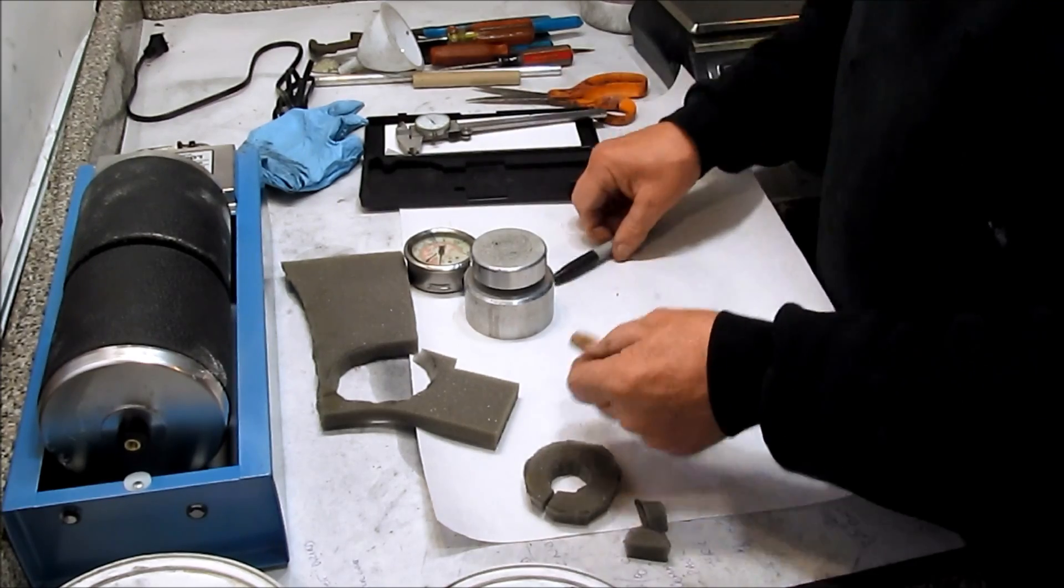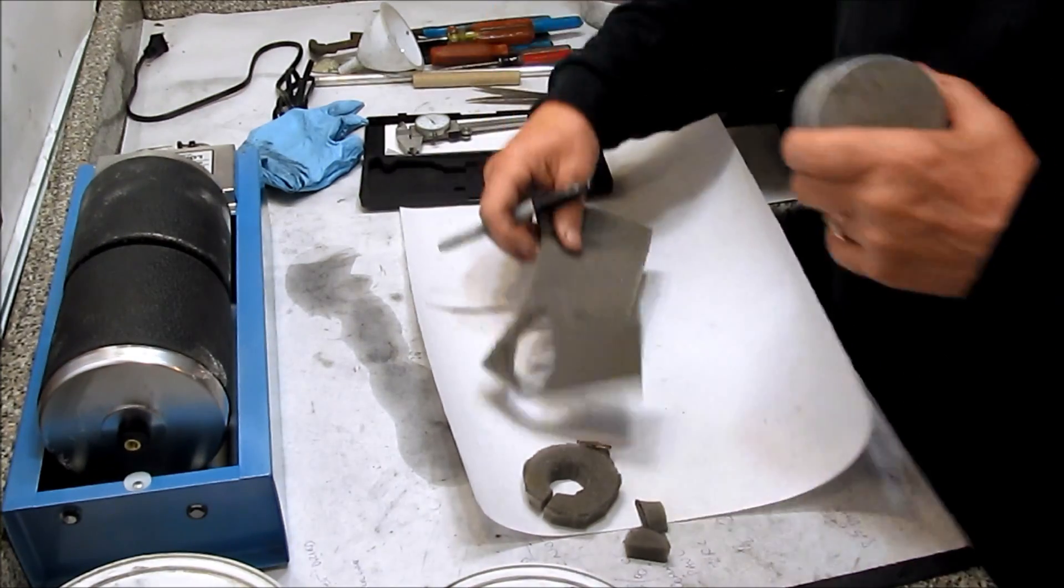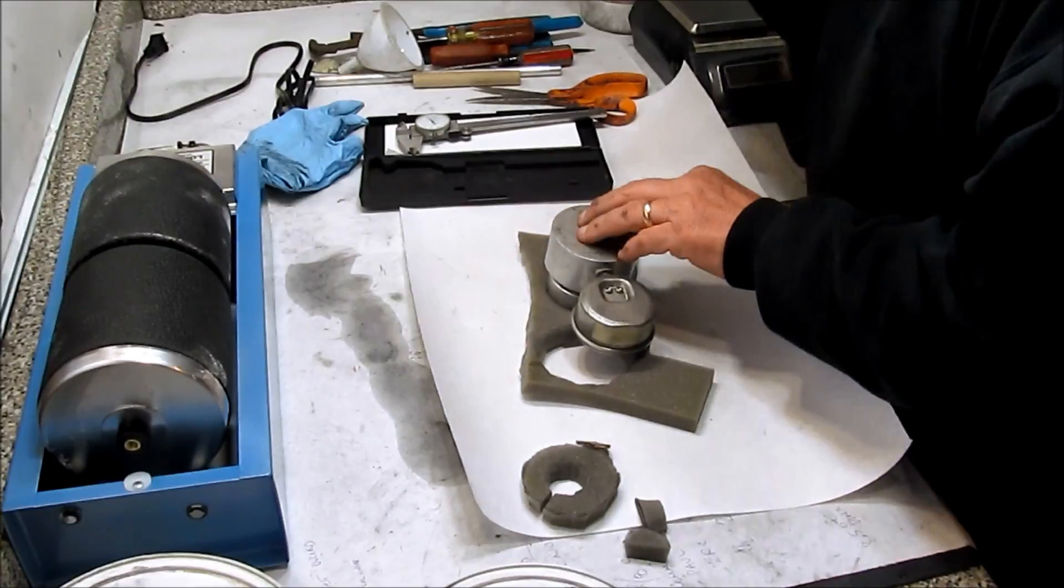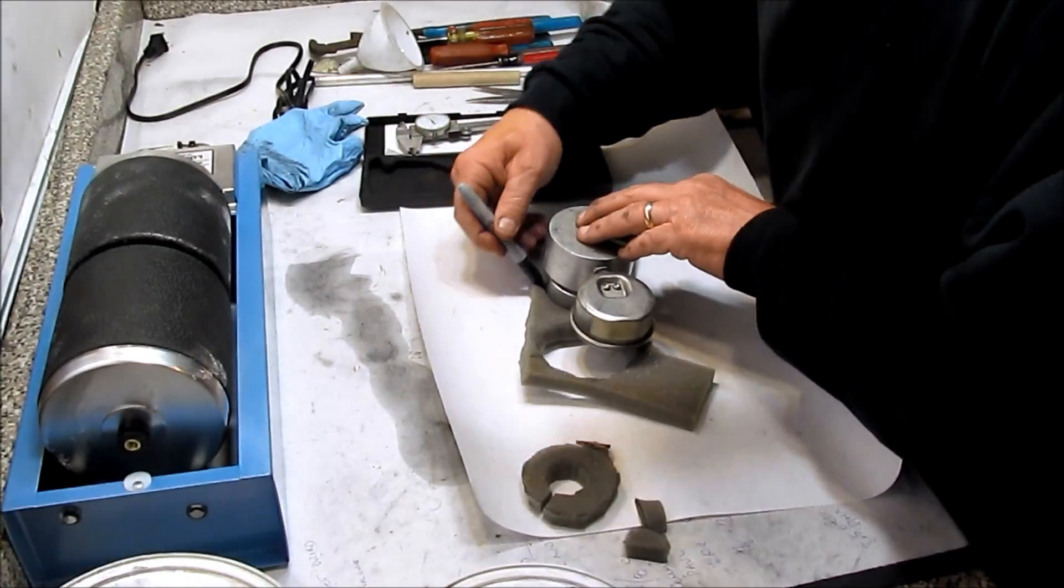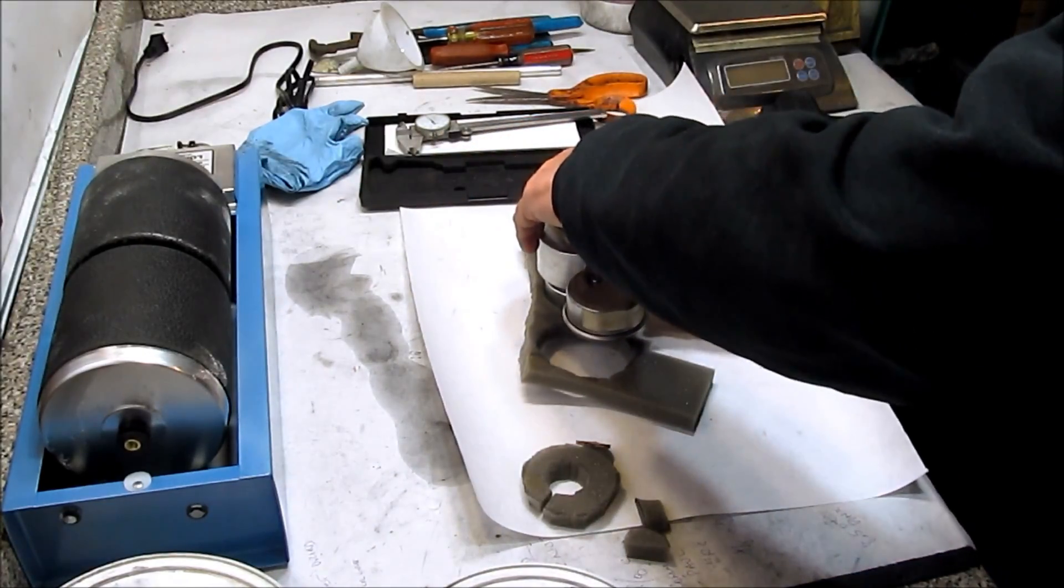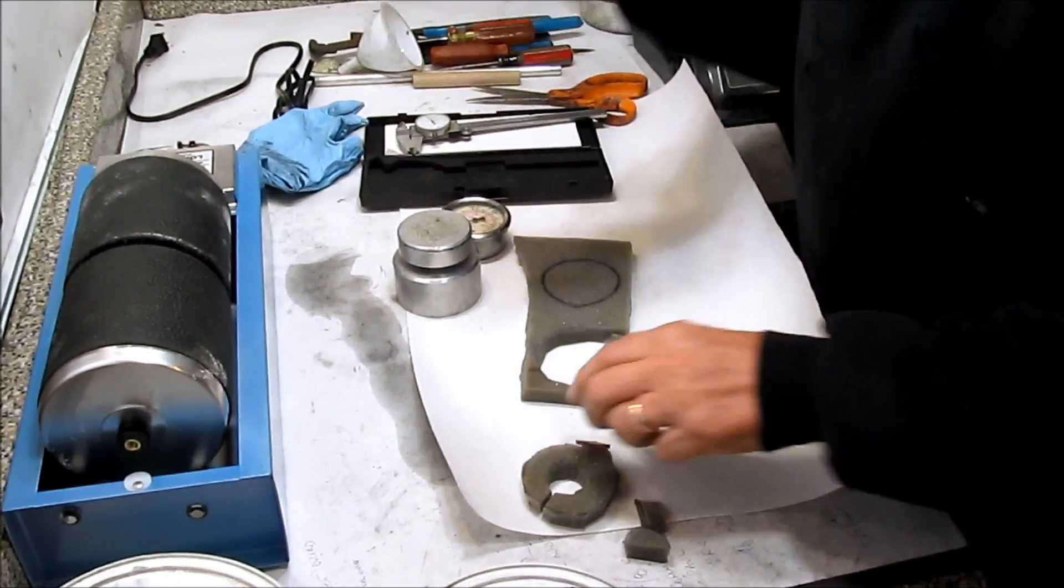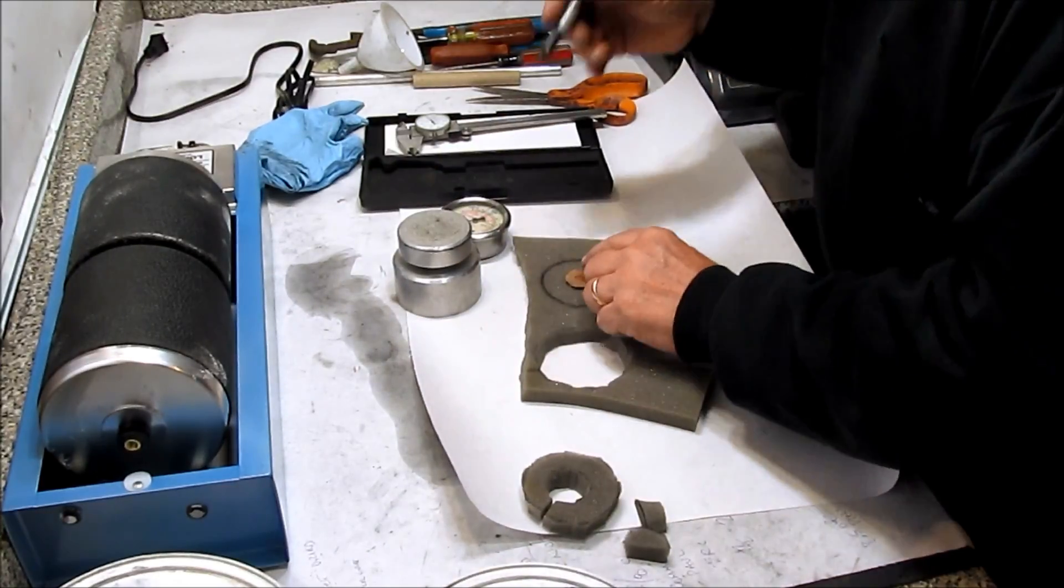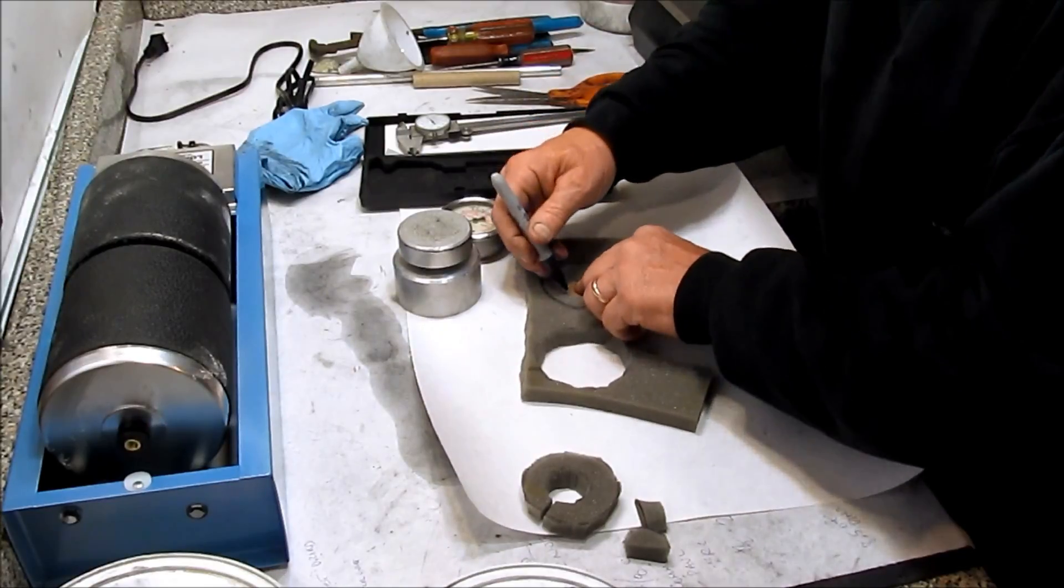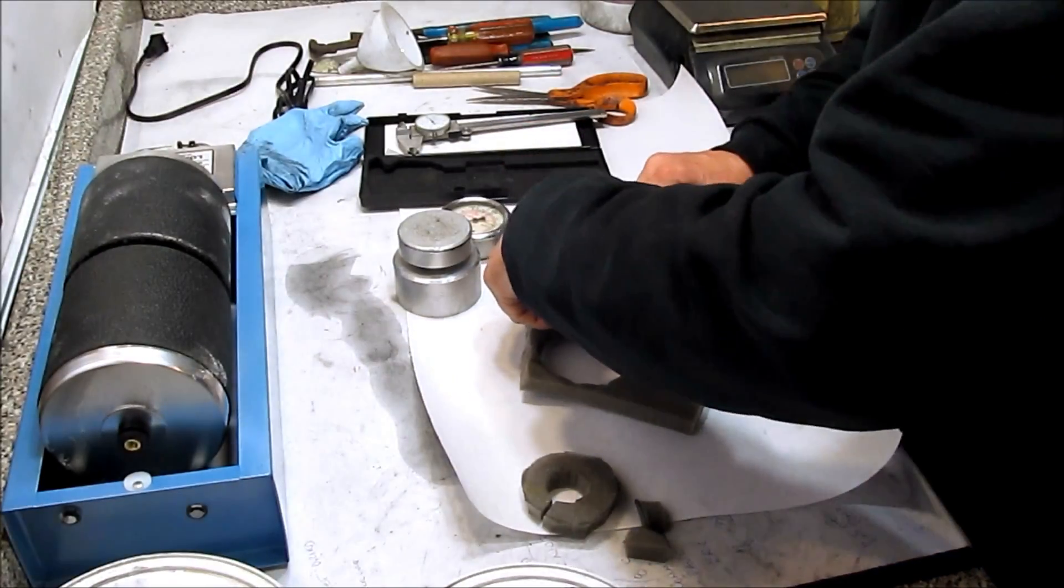I'm marking on the foam the diameter of that upper platform of the unit and marking that inch and an eighth hole in the center of that donut.